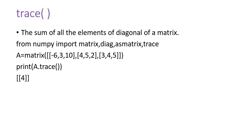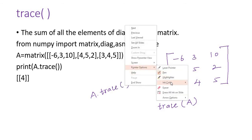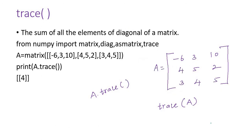Then there is trace, which is very important in signal processing and linear algebra. Say I have a matrix A with first row: −6, 3, 10; second row: 4, 5, 2; third row: 3, 4, 5. The trace sums the diagonal elements — the main diagonal. So it adds −6 plus 5 plus 5, which is 4. It will give 4 as the answer.